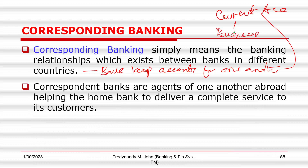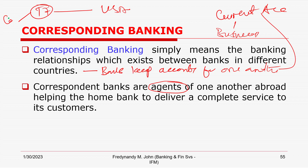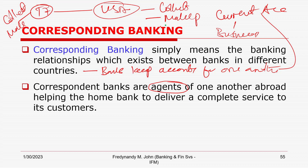For a bank to transfer funds, it needs to use the so-called correspondent banking relationship — banks need to have a relationship with one another. Correspondent banking relationship simply means the banking relationship that exists between banks in different countries. In this relationship, banks keep current accounts for one another and act as agents for each other. For example, a Tanzanian bank assists a US bank to collect and make payments, and conversely the US bank assists the Tanzanian bank to do the same.